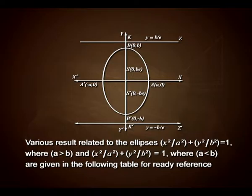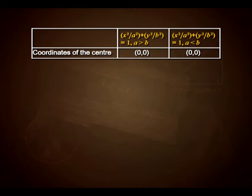Various results related to the ellipses x²/a² + y²/b² = 1 where a > b, and x²/a² + y²/b² = 1 where a < b, are given in the following table for ready reference. The coordinates of the centre for both ellipses is (0, 0).